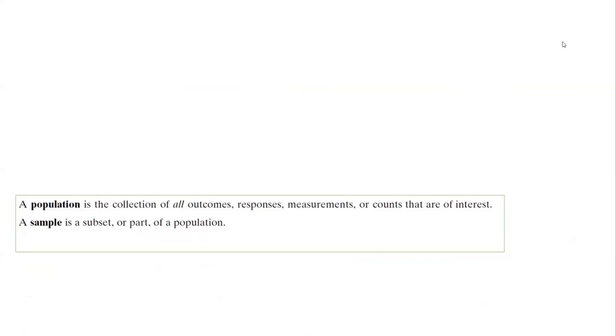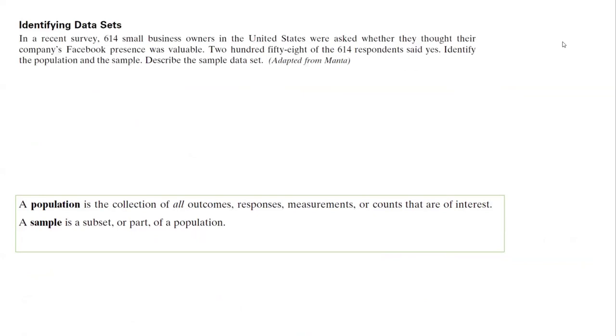Now that we learned about population and sample, let's take a look at this example. In a research survey—first of all, you have a keyword here, let me highlight that for you. When you see a survey, it means that you're dealing with a sample. So in this survey, you have 614 small business owners in the United States and they were asked if they thought their company's Facebook presence was valuable or not. Out of 614, 258 said yes. Question says identify the population and the sample.